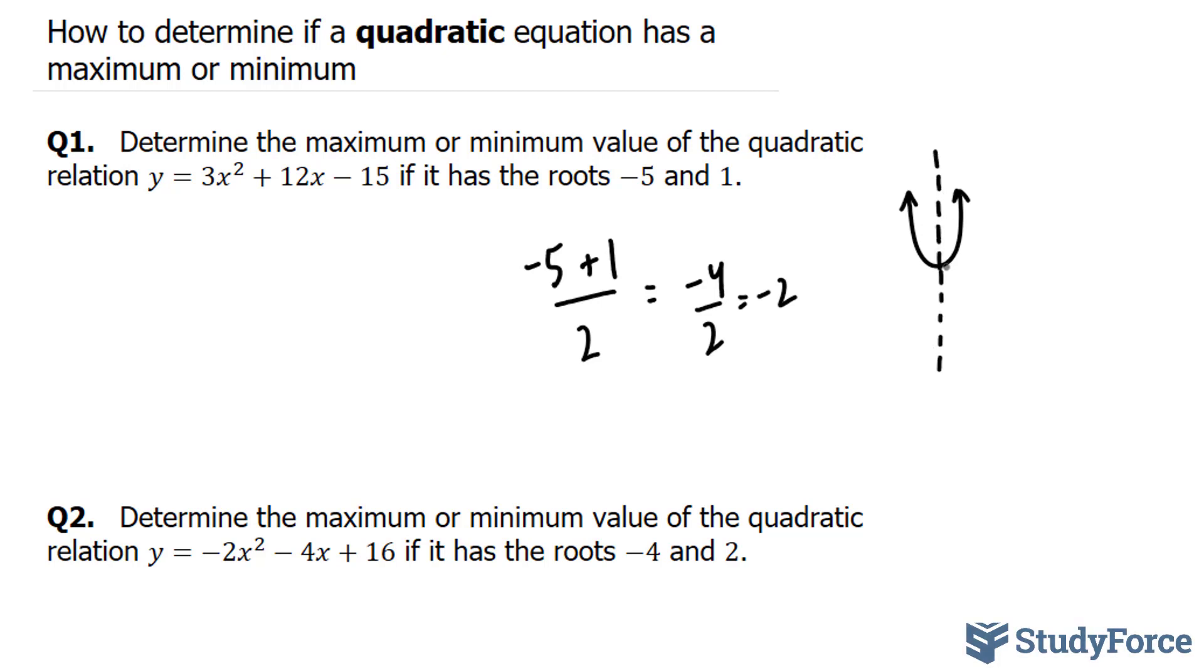Now to find exactly the minimum point for this equation, we also need to find the y-coordinate of this point. So so far we have the x-coordinate of the point. Now we need the y-coordinate of the point. To do that, you take your negative 2 and you substitute it back into the original equation.